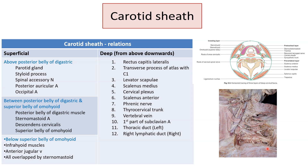The deep relations are those structures behind the carotid sheath. They are the pre-vertebral muscles, the transverse process of atlas with C1, rectus capitis lateralis, levator scapulae, the scalene muscles — both medius and anterior — the cervical plexus, the phrenic nerve, the thyrocervical trunk, the vertebral vein, the first part of the subclavian artery, the thoracic duct on the left side, and the right lymphatic duct on the right side.